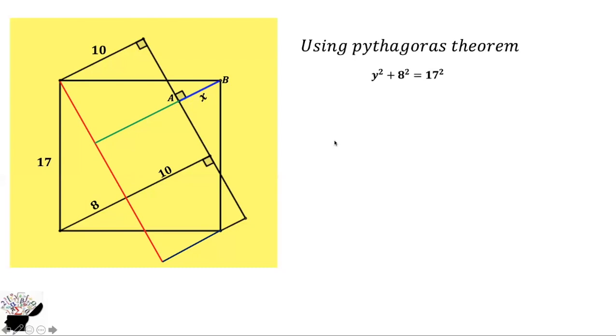Using Pythagoras, we're going to get y squared (maybe this side is y) plus 8 squared equals 17 squared. So y squared equals 17 squared minus 8 squared, so y equals 15. It means that this side to this side is 15.